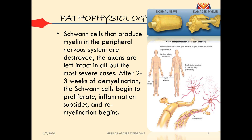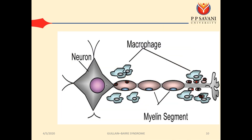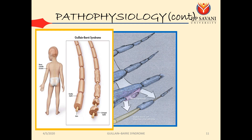Once the demyelination stops — after 2 or 3 weeks when the infection subsides — inflammation subsides and Schwann cells again take their place and start producing myelin sheath. Macrophages are responsible for removing dead tissues and foreign particles in the body. The myelin sheath is damaged due to inflammation, and you can see the course of the disease: inflammation causes damage to the myelin sheath and then complete removal of it.